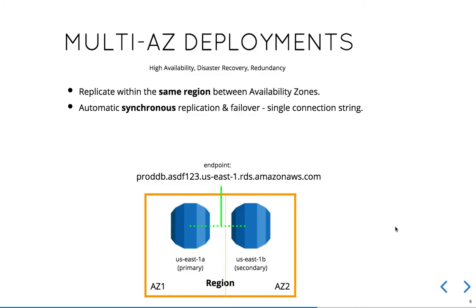Let's talk about multiple availability zone deployments. In multi-AZ deployments, the main objective is high availability and disaster recovery — to create redundancy between data centers in a given Amazon region. For example, in the US East region we have AZ1 and AZ2 — each at a separate physical location. Our primary database is in US-East-1A, replicating to US-East-1B. All of the replication and heavy lifting is done automatically by Amazon and happens synchronously.